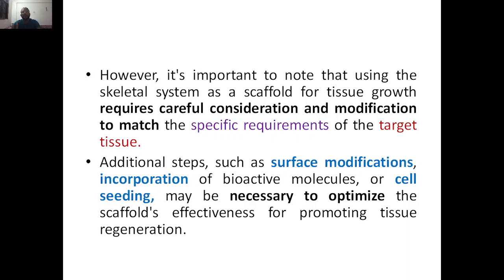It is important to note that using a skeletal system as a scaffold for tissue engineering requires careful consideration and modification to match the specific requirements of the target tissue. For example, if a person's hand bone is damaged, the specific considerations for that bone are very important because the target tissue is different. For the ear, there is cartilage, which is totally different; the nose is different; the skull is different.